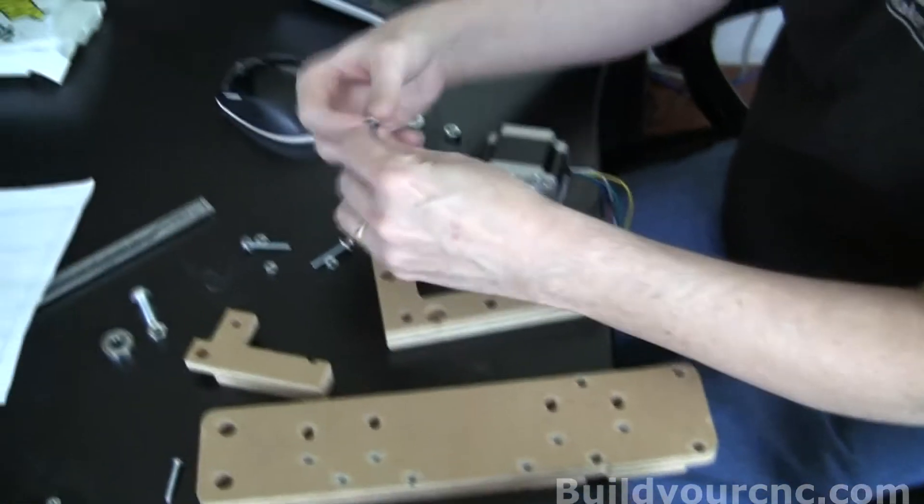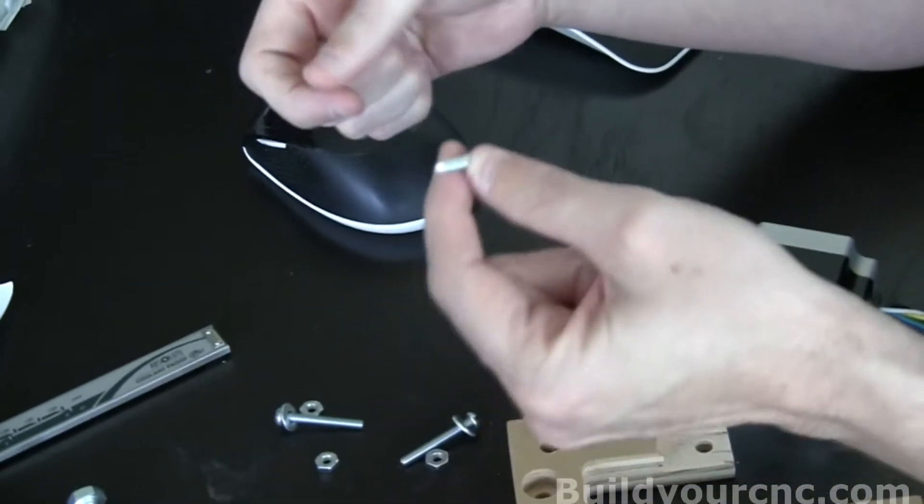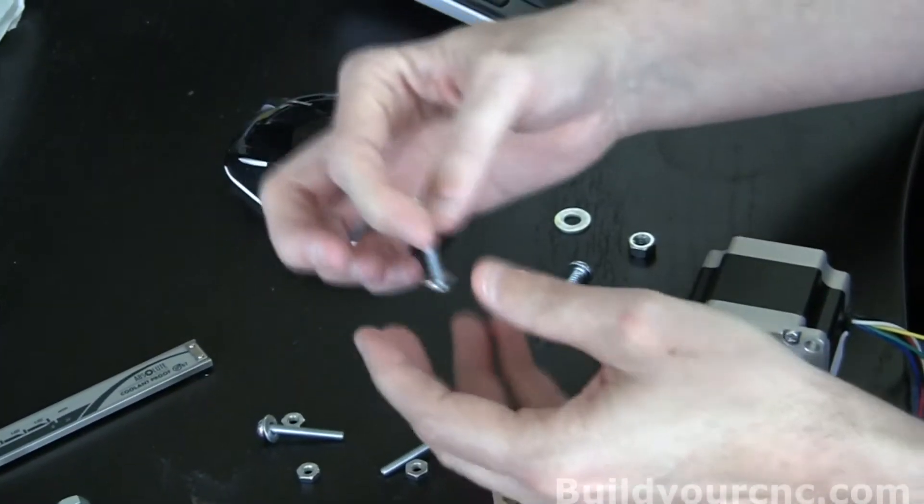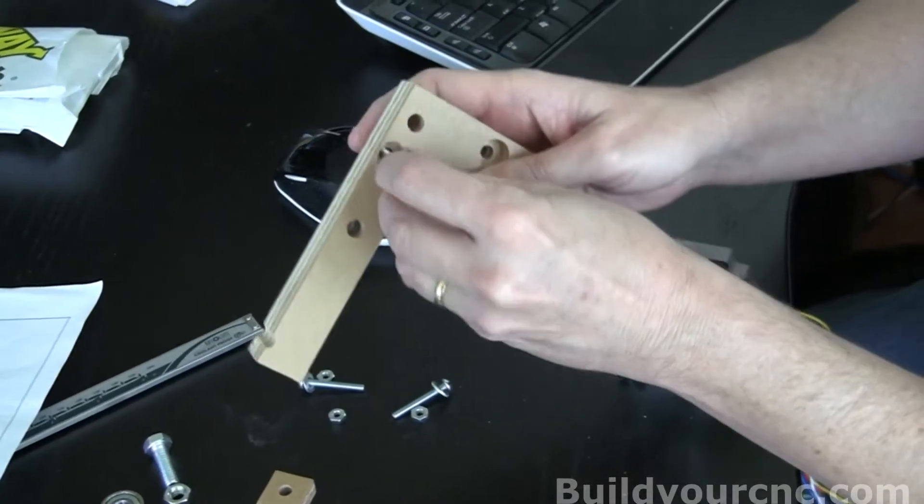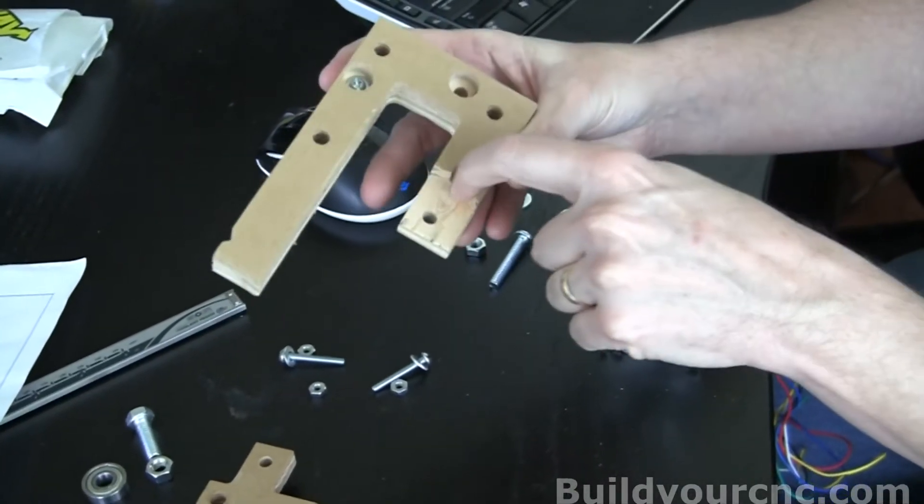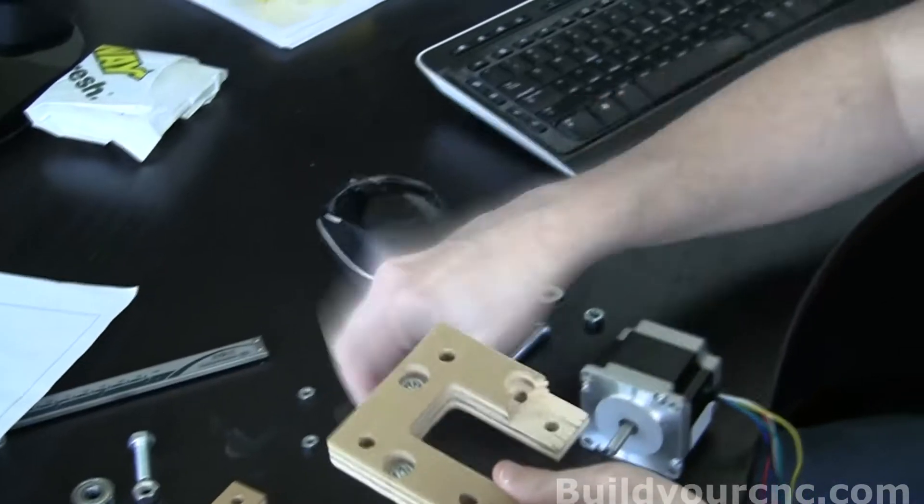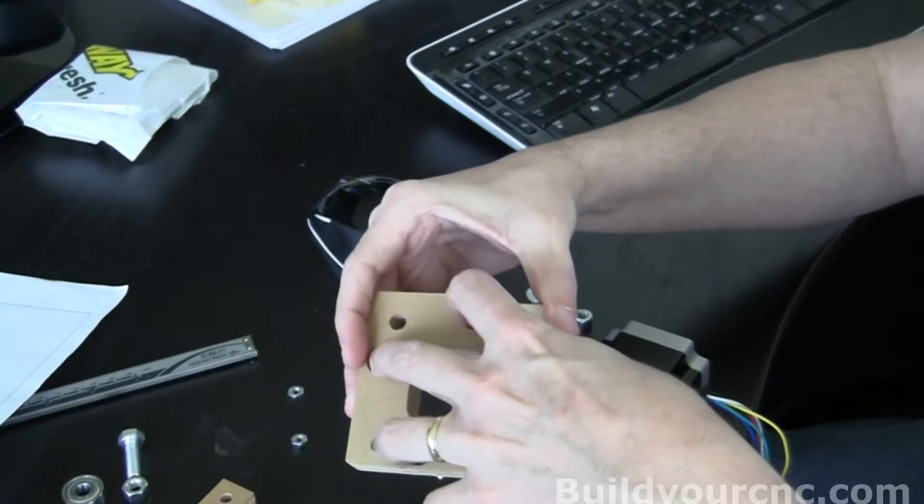You'll need three one and a half inch number eight screws and small washers. Put the washer on the number eight screw, then put the number eight screw in these three counter board holes and we'll put the motor on the back.